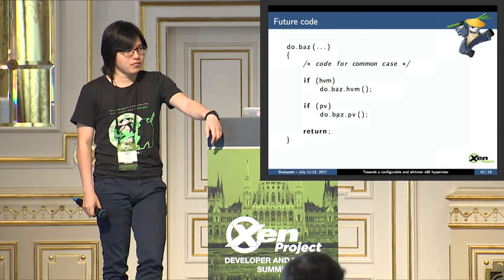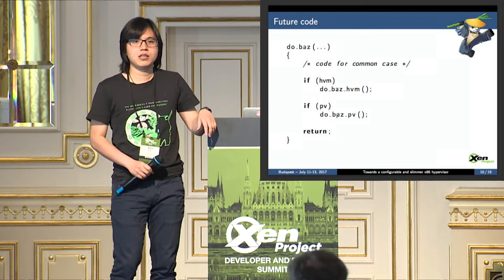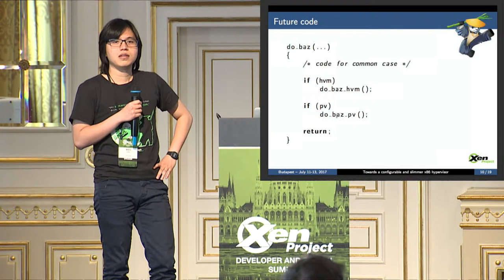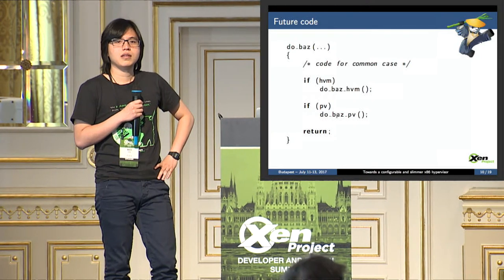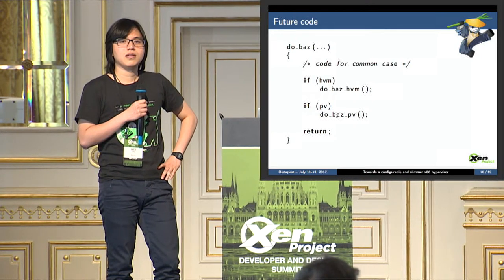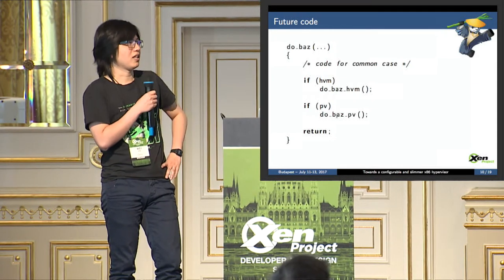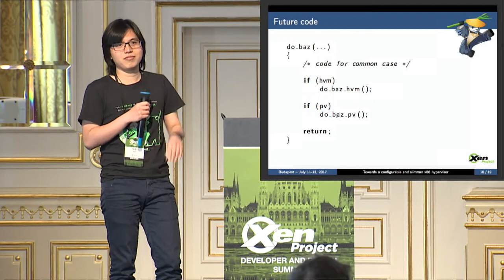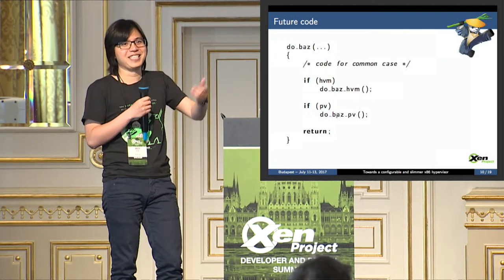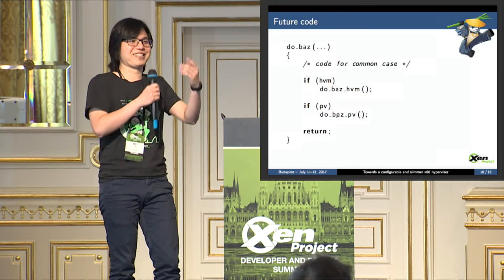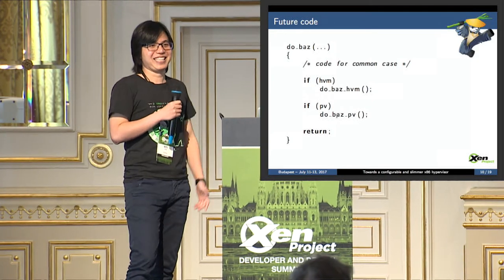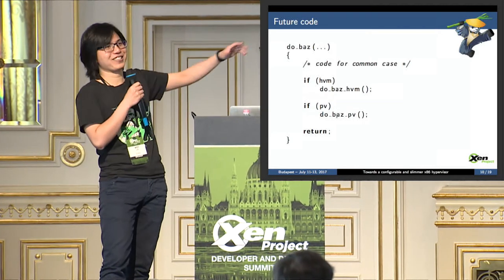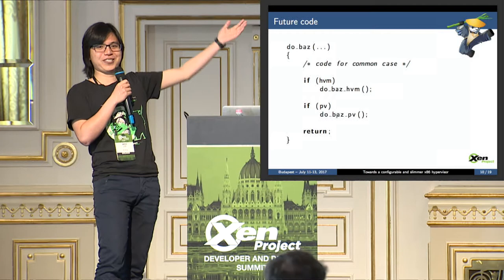Another suggestion from the audience: why not, when the domain is initialized, have an ops structure with function pointers so you just call the right one? The speaker agreed that's one way of doing it, noting that Andrew had made similar suggestions. The slide shown was just for the purpose of demonstration and the speaker is not strongly opinionated about the exact approach.